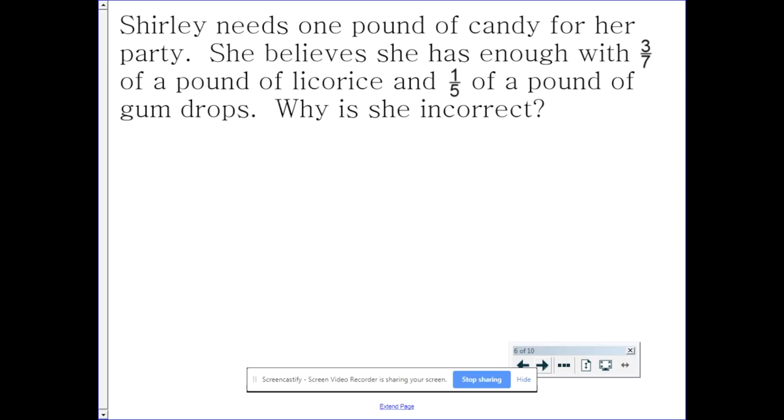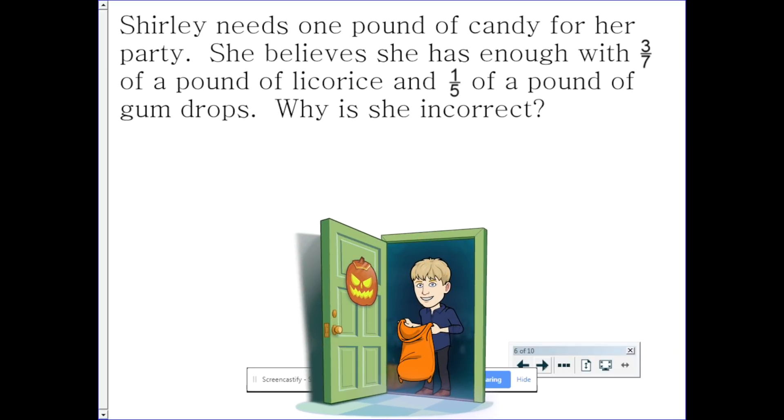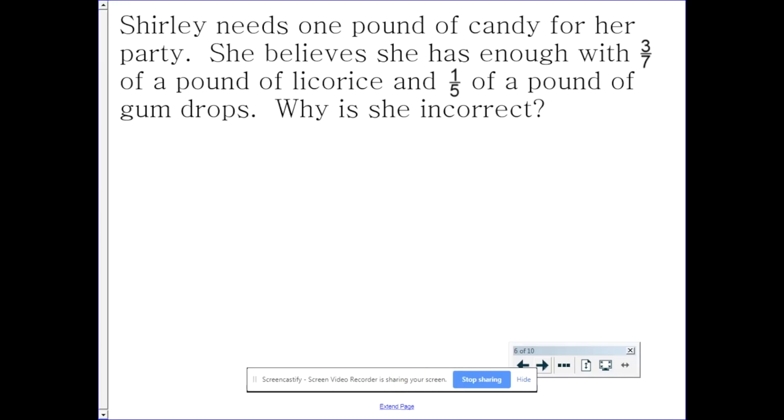Let's take Shirley, for example. Shirley needs one pound of candy for her party. She believes she has enough for three-sevenths of a pound of licorice and one-fifth of a pound of gumdrops. Why is she incorrect?